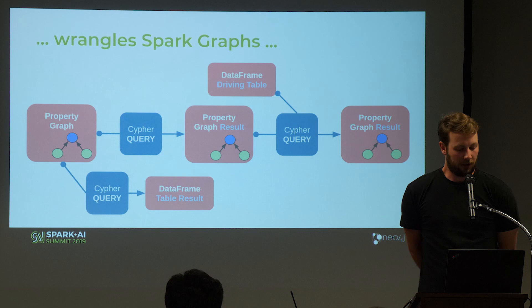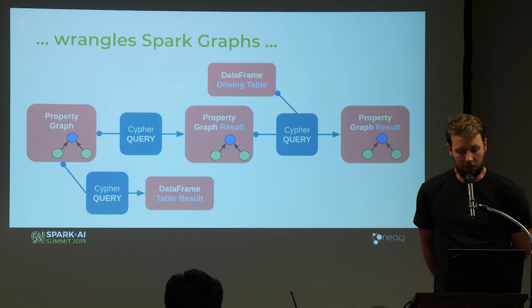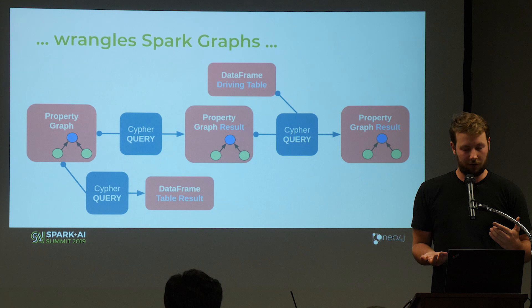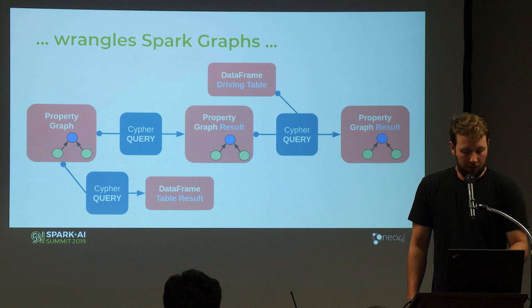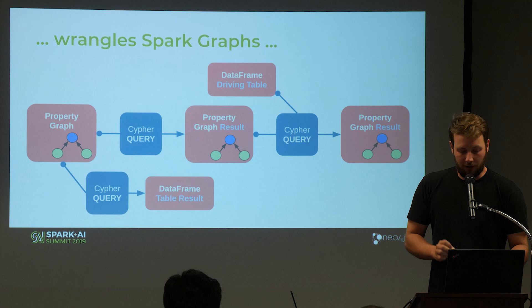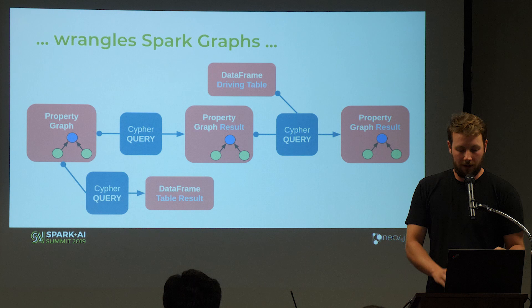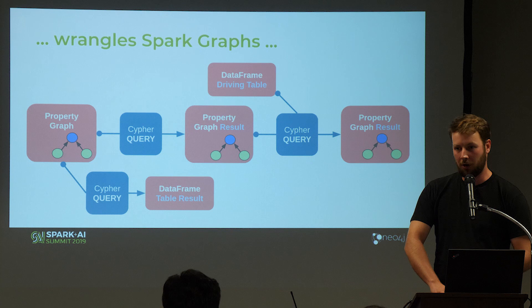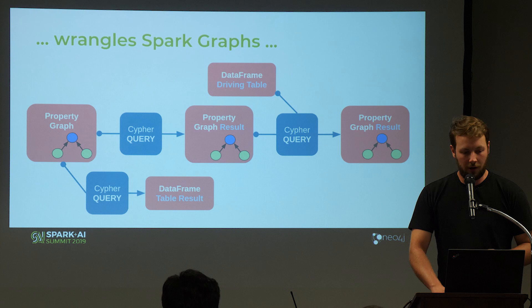Property graphs that come out of Morpheus are composed tables — they consist of data frames. This is a data flow you can imagine when working with Morpheus or Spark 3.0: we start off with a property graph, run a Cypher query, and one possible result is a data frame. But there's also the capability to get another graph back, on which you can execute another Cypher query. On data frames you can execute SQL queries.